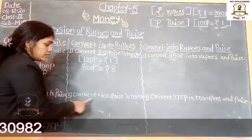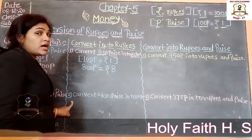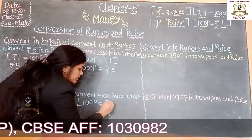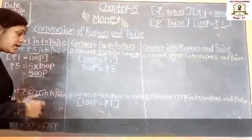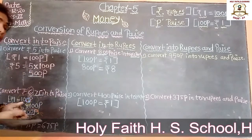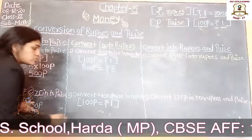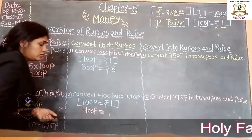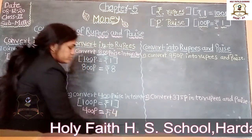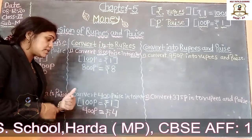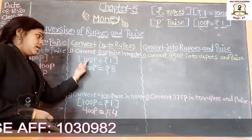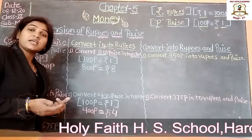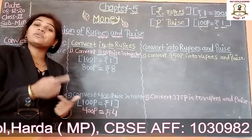One more example: convert 400 paise into rupees. 100 paise is equal to rupees 1. So 400 paise is equal to rupees 4. Similarly, 800 paise equals rupees 8, 300 paise equals rupees 3, and 200 paise equals 2 rupees. Clear students?